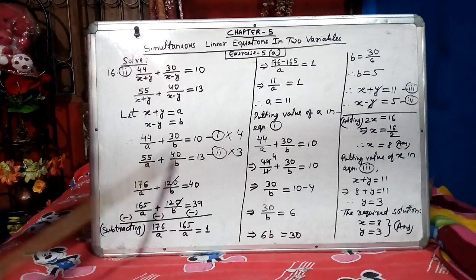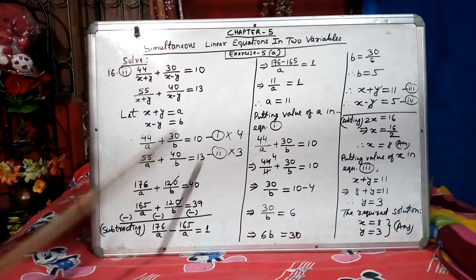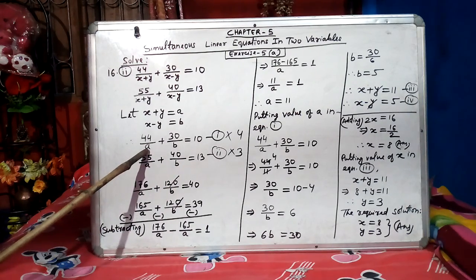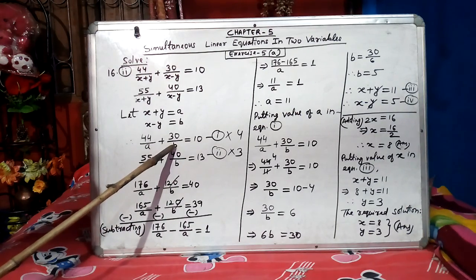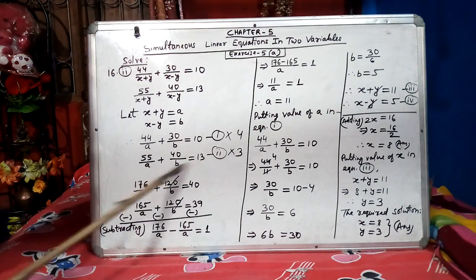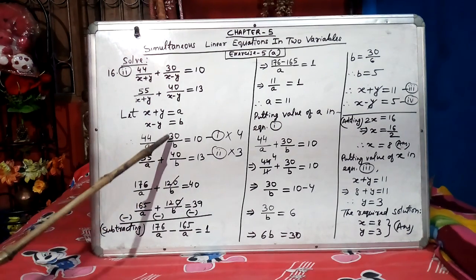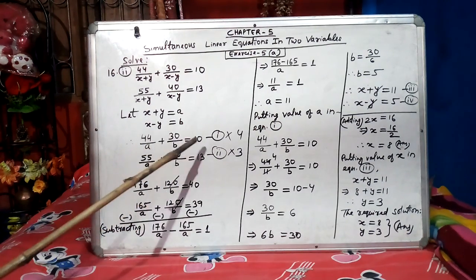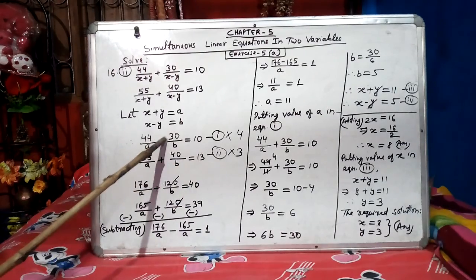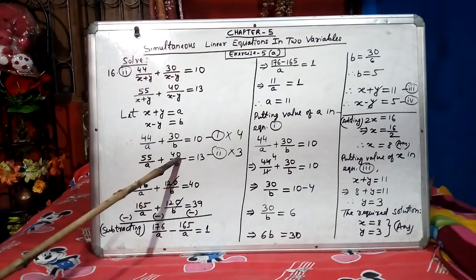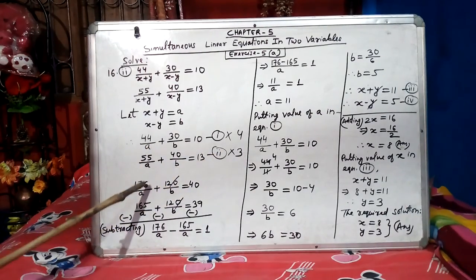Now we want to cancel b here, b group. Now it is perfect also. Why? First position only for a, second position only for b and a constant term. So now we want to cancel b. When we cancel b, LCM of 30 and 40 is 120. That means 30 should be multiplied by 4, 40 should be multiplied by 3. So after multiplication,